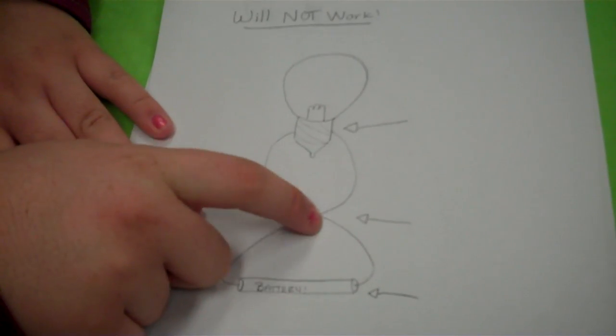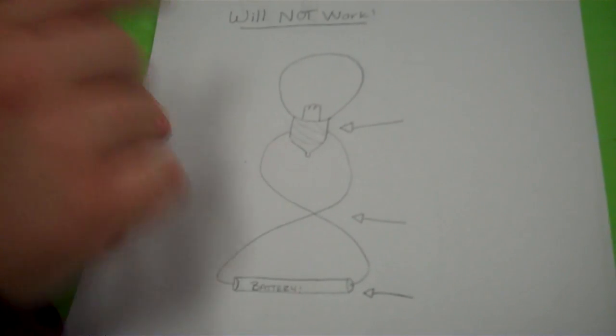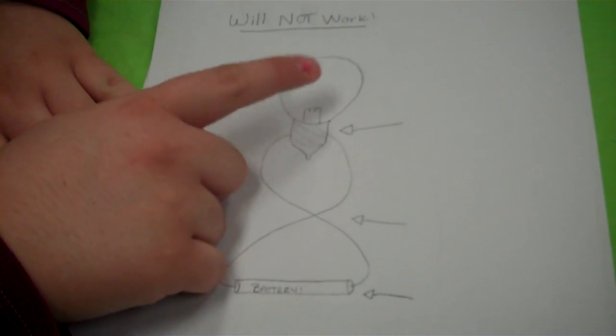Second, you want to make sure that your wires do not cross. As I said before this will interrupt the circuit and the electricity will not get to the light bulb.